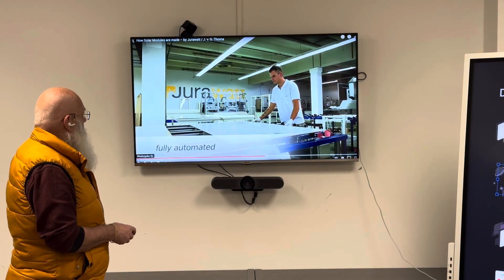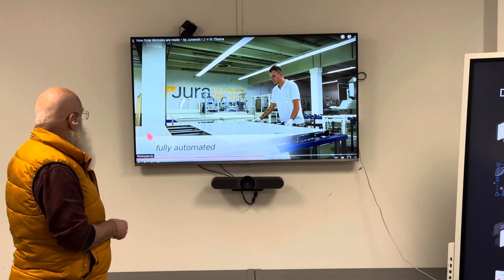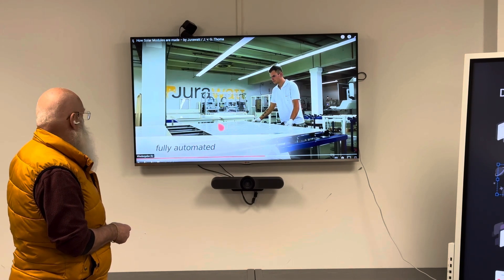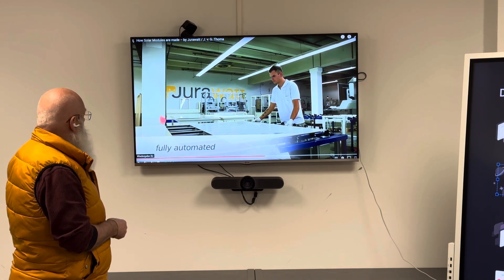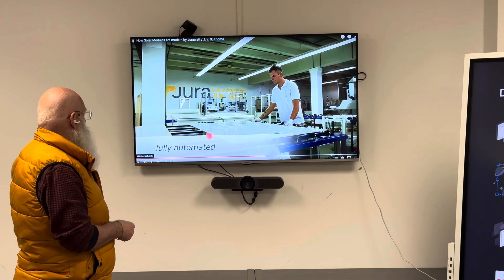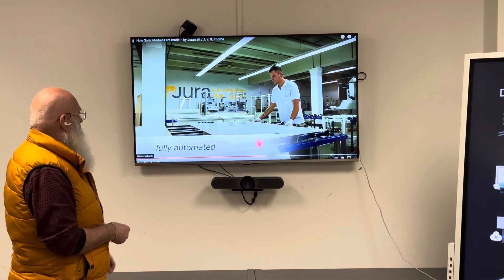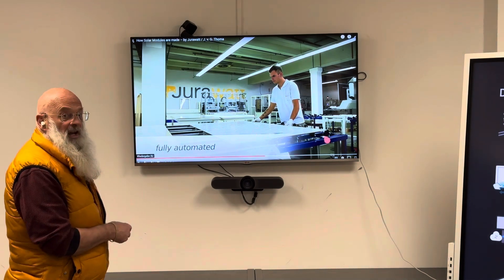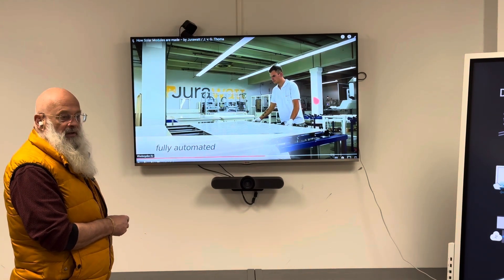Again, the fully automated loading process of the laminator. I think this was line two. There are normally one, two, three or four solar modules on the loading conveyor. Then all these modules are loaded to the lamination area which is heated up to 155 to 165 degrees.